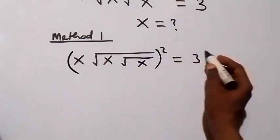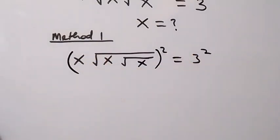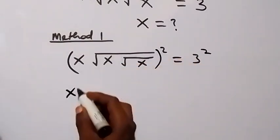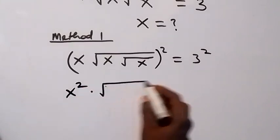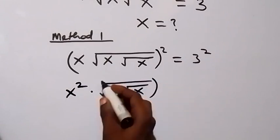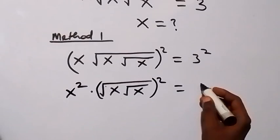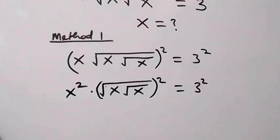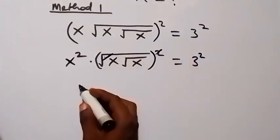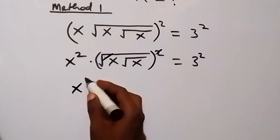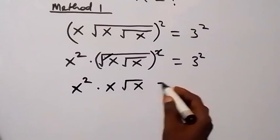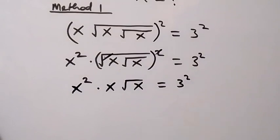We take the square on this side and also on this side. This square will affect x and also affect this square root. So we have x squared times square root of x, then root x equals three squared. In the next step, this square cancels the square root, giving us x squared times x times root x equals three squared.